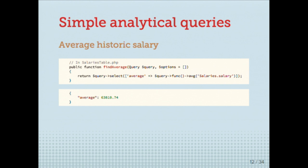The employees table is similar — it has many salaries, many titles (it's also a historic title table), and it belongs to many departments. It belongs to many because in the past it belonged to other departments. For simplicity I'm not adding more relationships specifying the most recent or current department. Let's create some simple analytical queries. The first one is: get me the salary average for all employees.